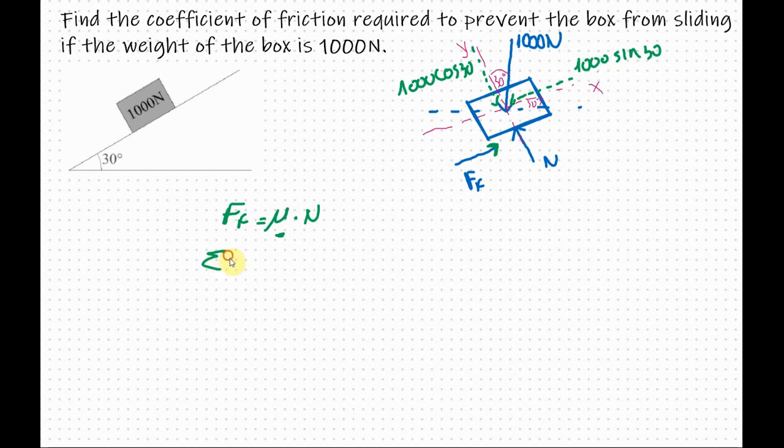The sum of the forces in the x direction equals 0. So in the x direction we have positive friction force, so μ times N, and we have negative 1000 sine 30. From here we can see that we have two unknowns. We have μ and we have N. So I have to keep going.